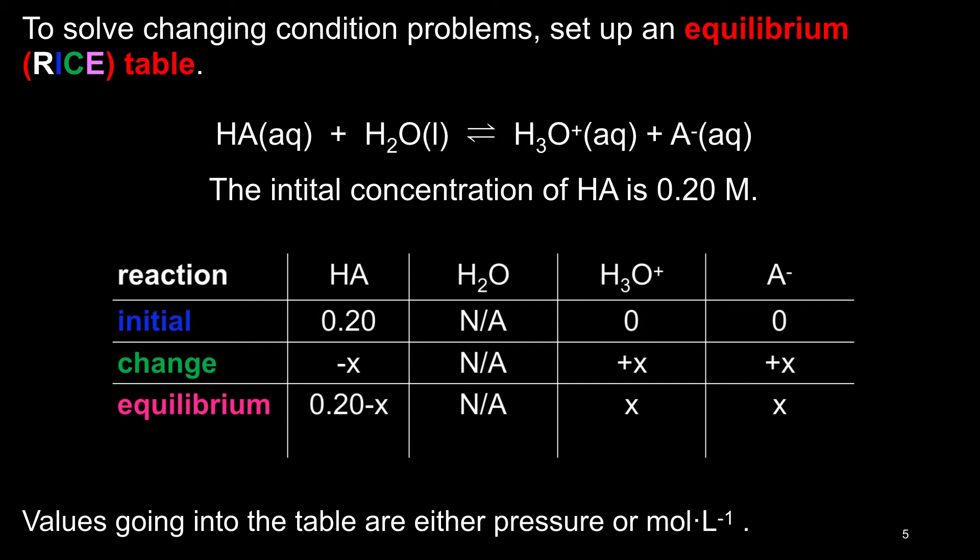To get the fourth line, simply add together the second and the third lines. The results will represent the equilibrium concentrations of all species in the equilibrium expression in terms of the initial concentration and X.